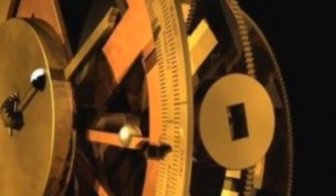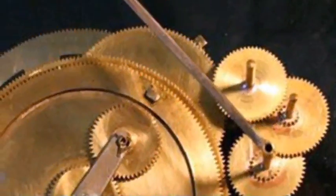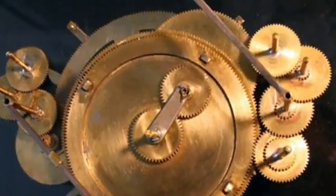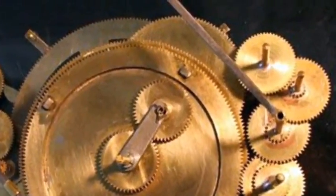It was so technologically advanced, nothing surpassed it for close to 1,500 years. Consisting of at least 30 bronze gears in a wooden container that was only the size of a shoebox, the clockwork mechanism was highly advanced for its time.